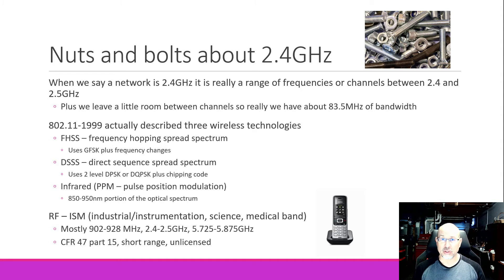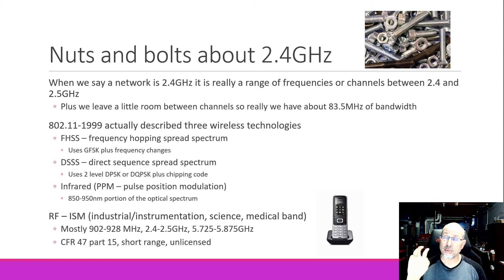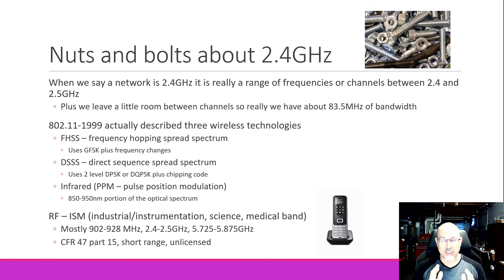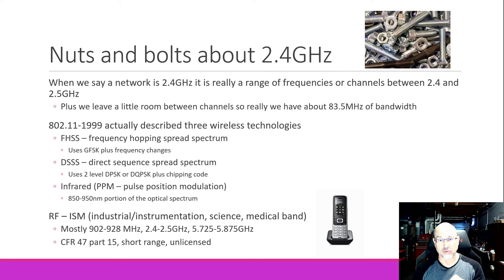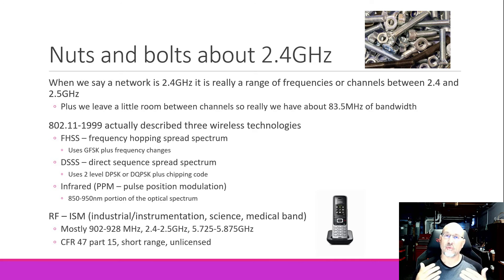The 2.4 GHz portion of the spectrum is also called the ISM band, but the ISM band is much larger than just 2.4 GHz. The three main chunks we always talk about are 900 MHz (902 to 928), 2.4 GHz, and a chunk at 5 GHz. Within the industrial, science, and medical band, we use 2.4 GHz for 802.11b, g, and the early standard 802.11, then jump up to 5 GHz. Cordless phones — not cellular phones — very commonly use the 900 MHz or 2.4 GHz portion for their signaling.